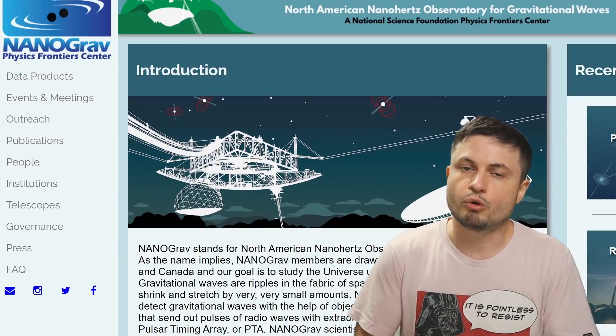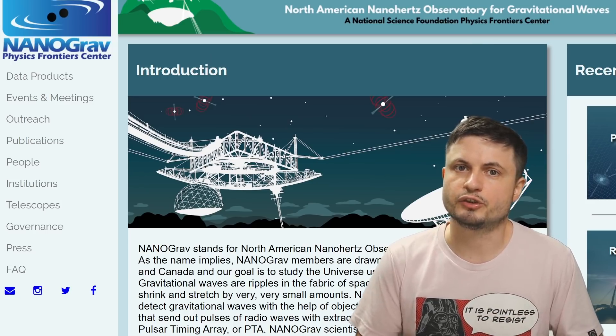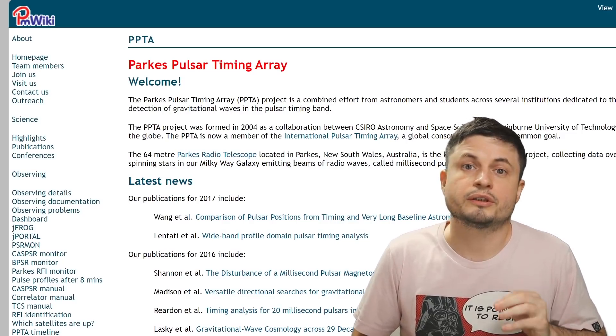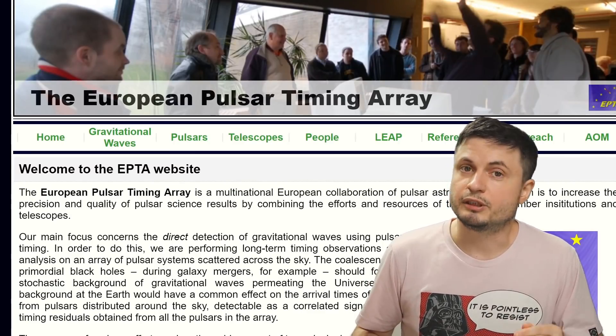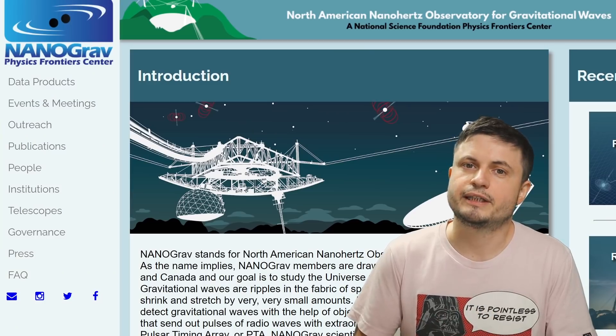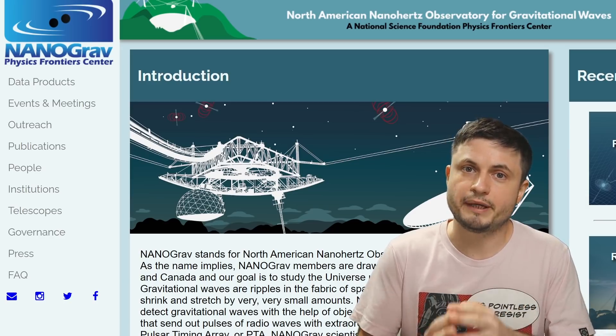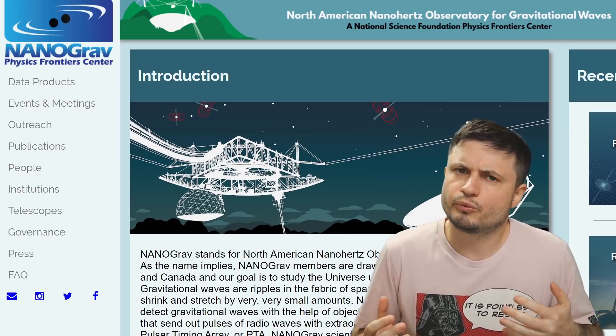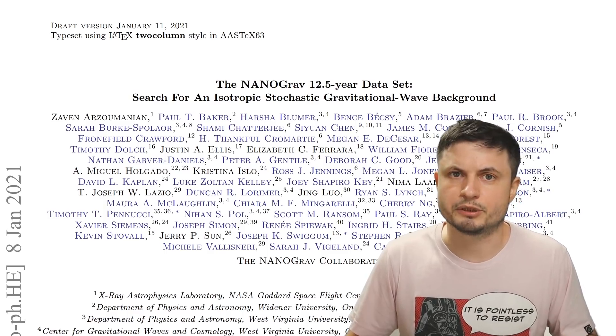Now the biggest and the most well-known such study is this one right here known as NANOGrav and I've briefly talked about this in one of the previous videos as well. There's also one such measurement going on in Australia with the Parkes telescope and there's the European version of this as well. But the most famous and the one with the most accurate results so far is definitely the NANOGrav. And not so long ago, only a few months ago, NANOGrav released one of its major data releases in the last few years, identifying some really peculiar patterns.